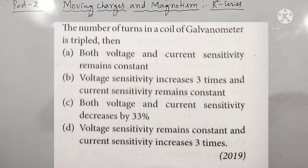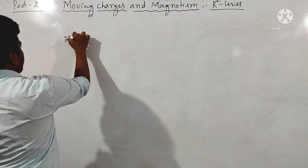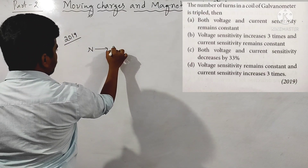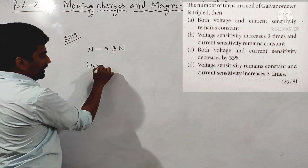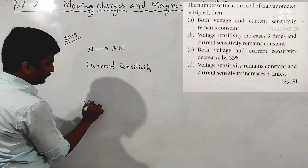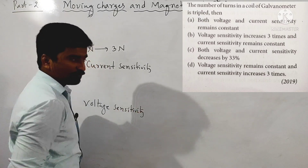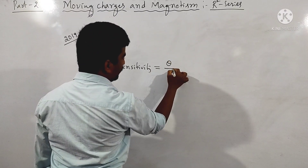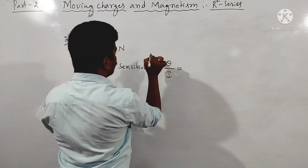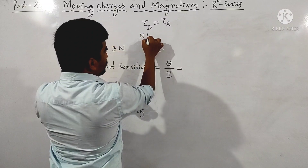Next question from the same year 2019: the number of turns in the coil of a galvanometer is tripled — what happens to the voltage sensitivity and current sensitivity? Current sensitivity is defined as theta divided by i. We need to find the relation using the deflecting torque equals restoring torque condition.